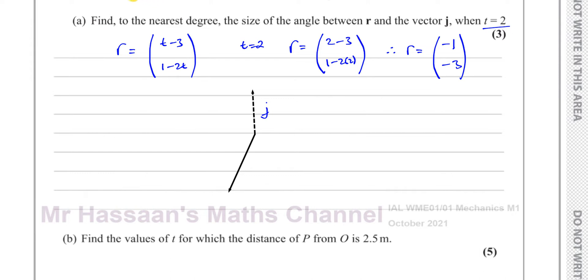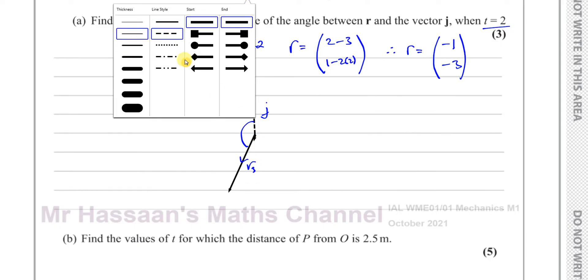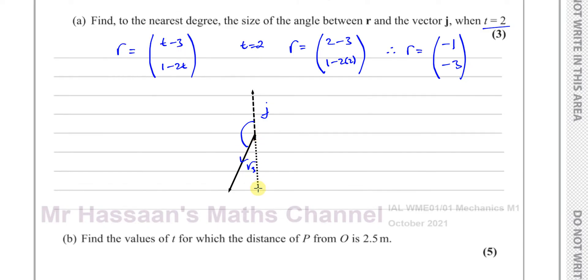Now I need to find the angle between j which is pointing north and this which is pointing down here, so it's this angle over here that I need to find. Now if I find the angle down here, let me just make a line. If I find this angle over here, let me call this angle x.